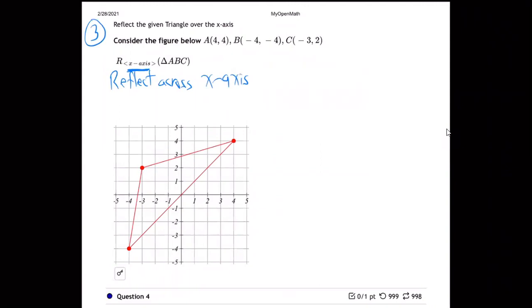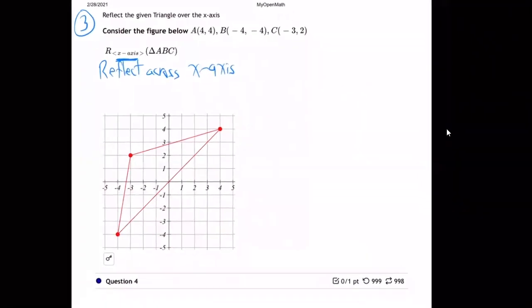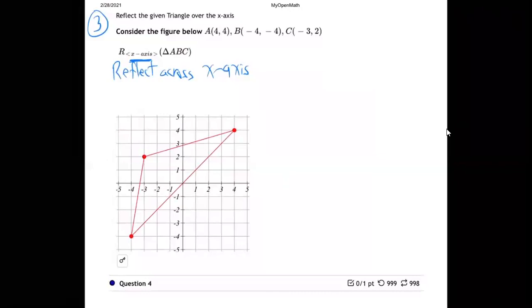Triangle ABC. So I'll take triangle ABC and reflect it across the x-axis. How to do that? Well, first off, let's put down the x-axis, which is right here. This is the x-axis. So we're going to reflect across the x-axis.